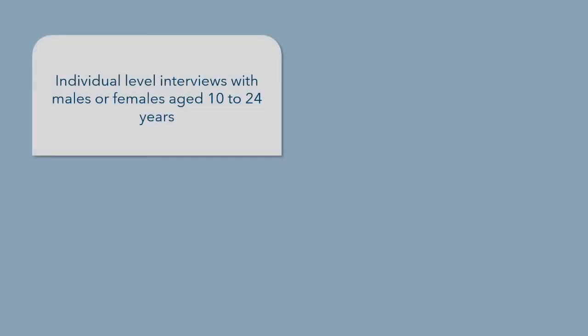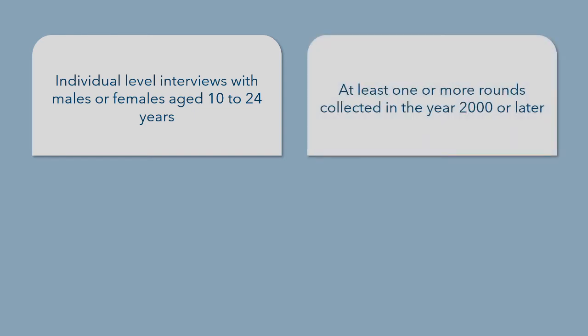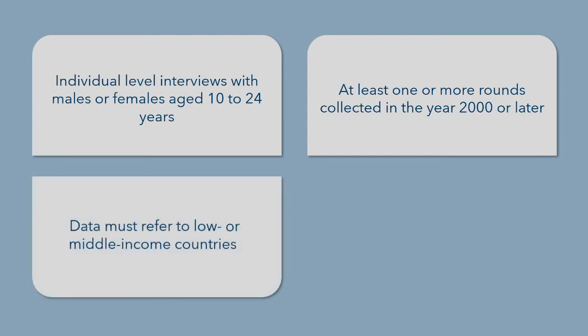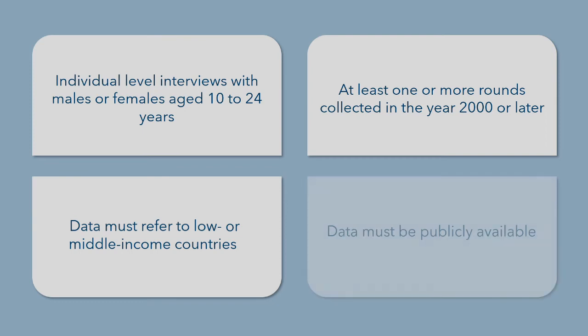In order to be eligible for inclusion in the Adolescent Data Hub, the data must meet four main criteria. First, they must include individual level interviews with males or females aged 10 to 24 years. Second, the data must be relatively recent, so at least one or more rounds collected in the year 2000 or later. Third, the data must refer to low- or middle-income countries. Finally, the data must be publicly available.